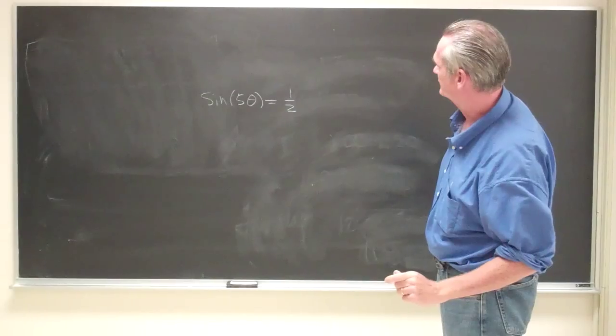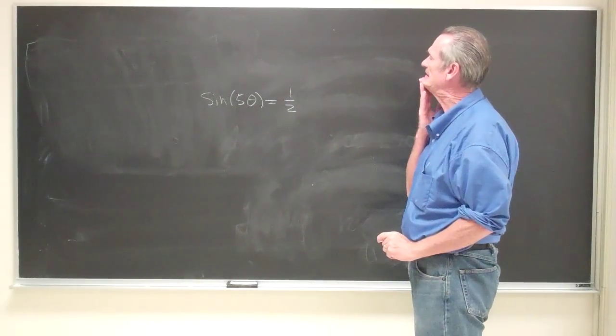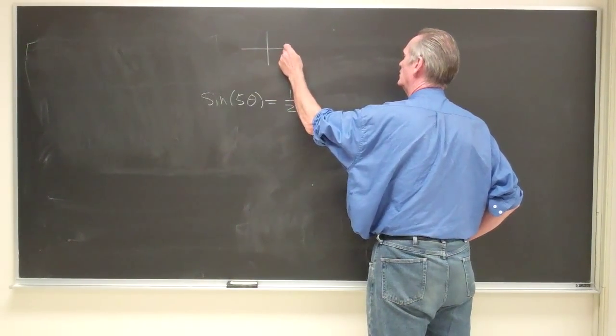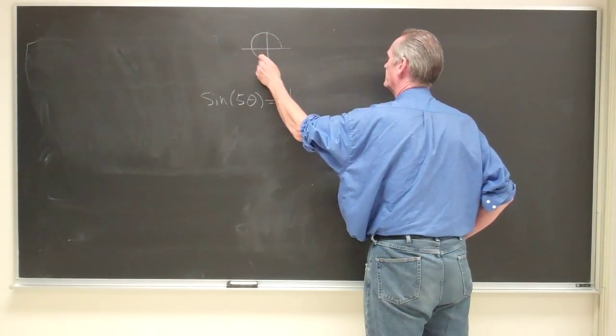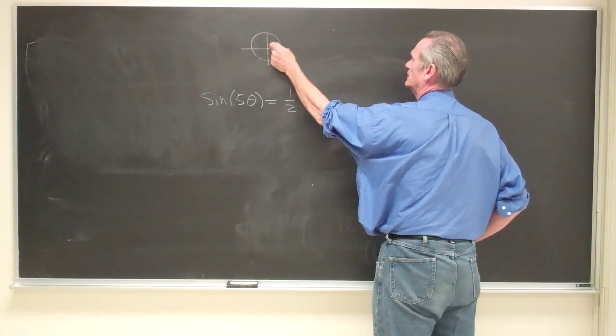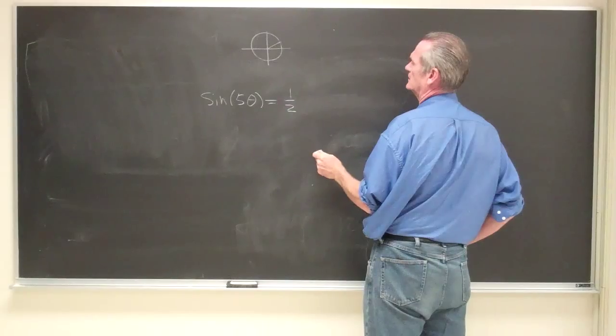Now, the first problem here that you experience is that you know that 5 theta in a fundamental region is going to be either, let's see, pi over 6 or 5 pi over 6.